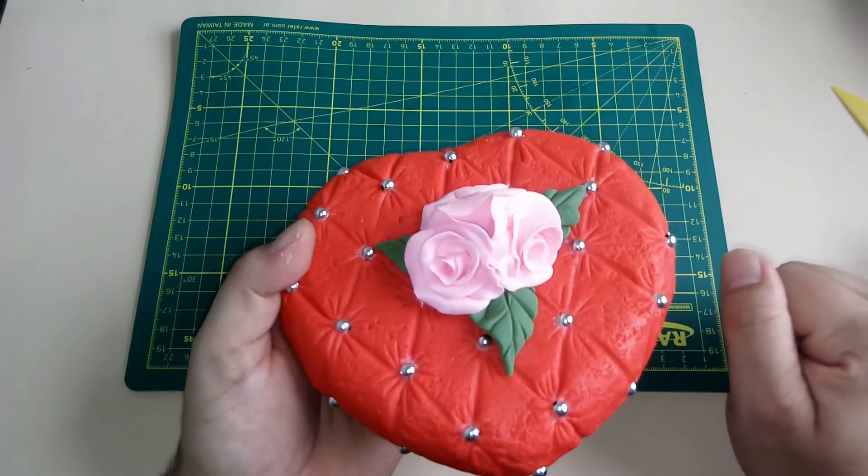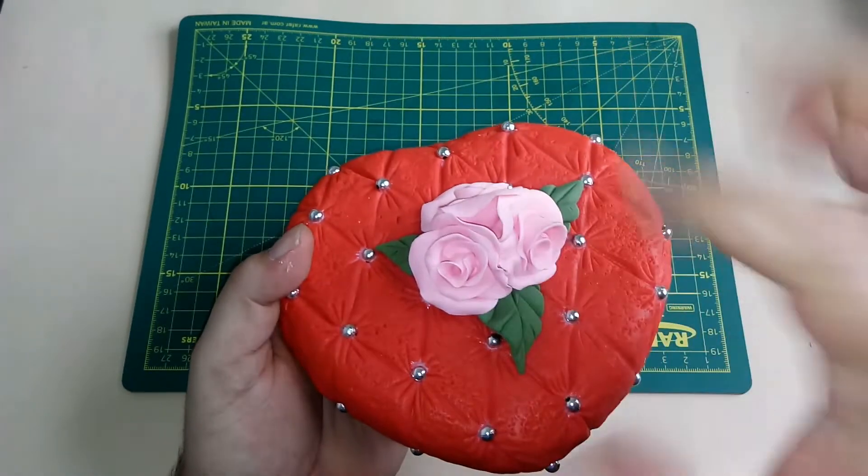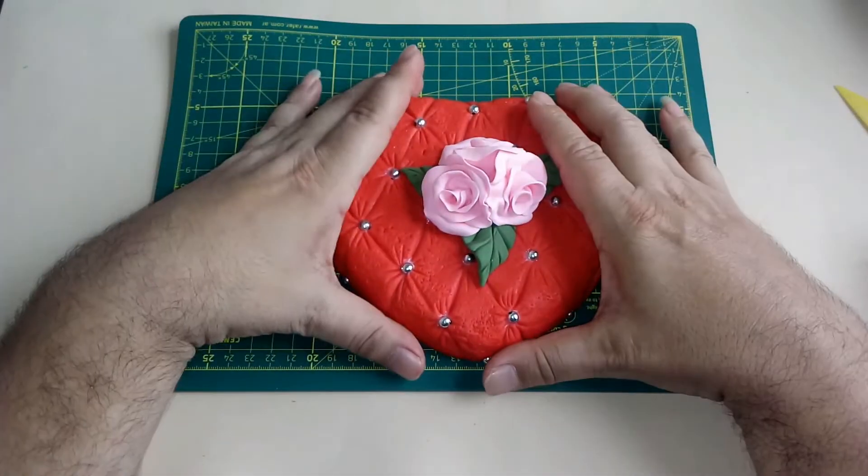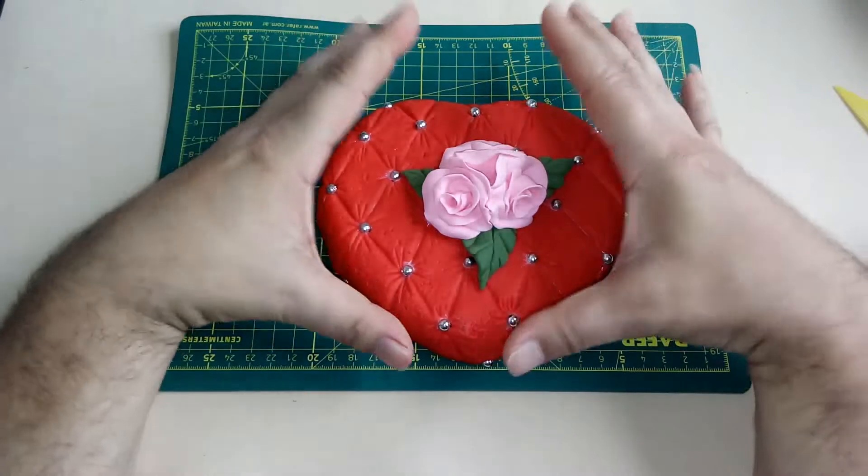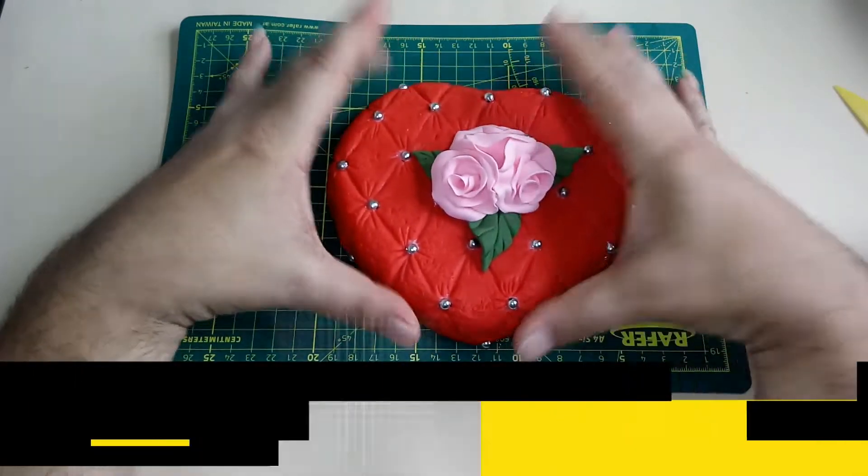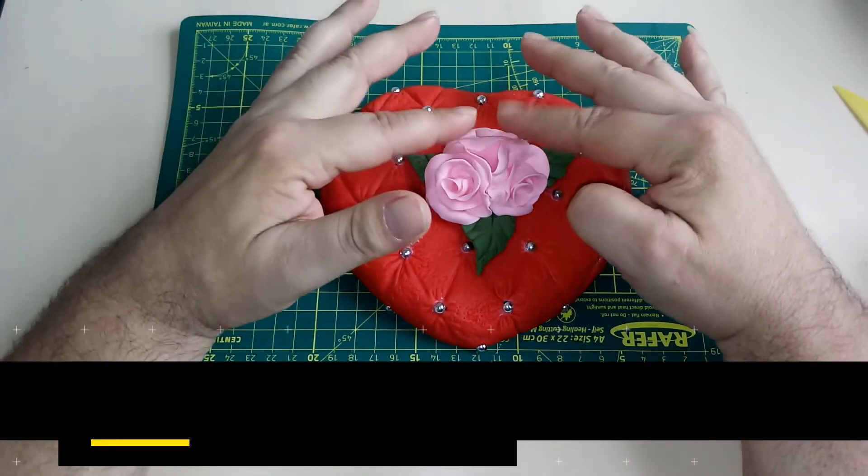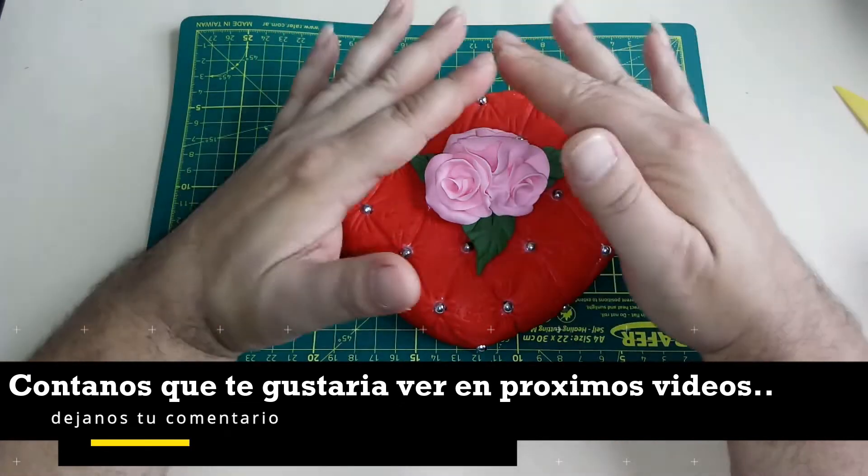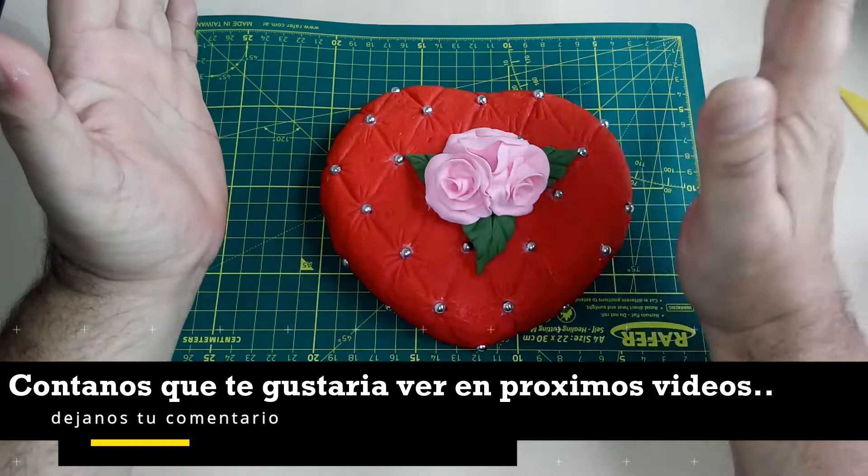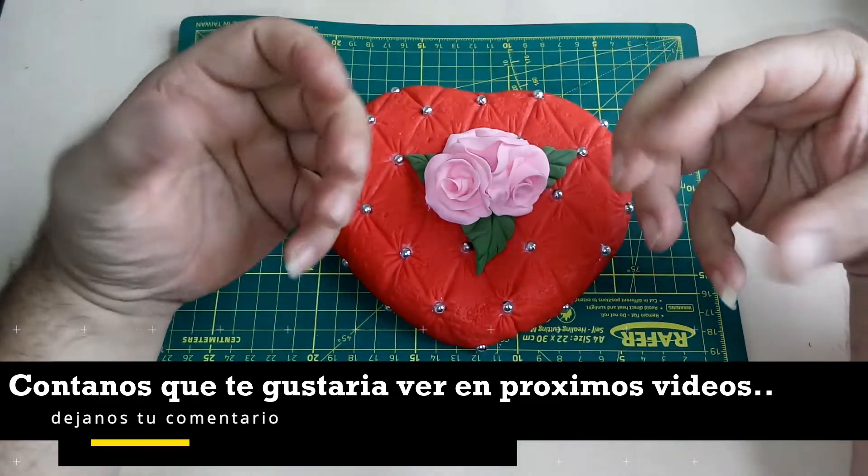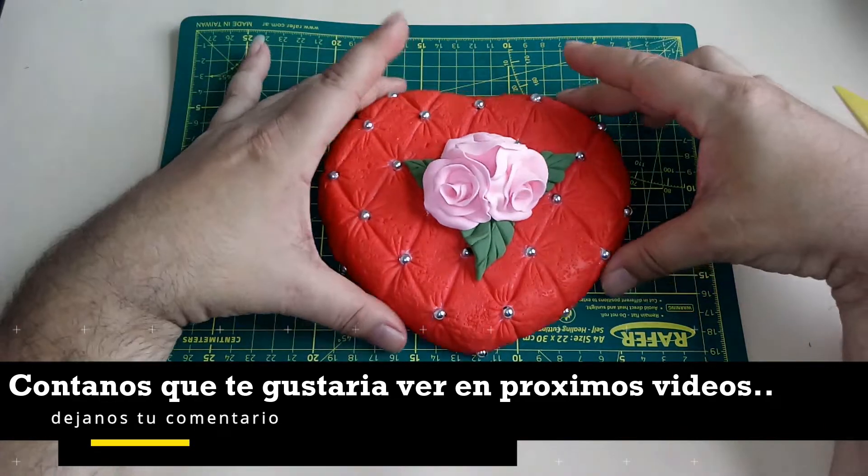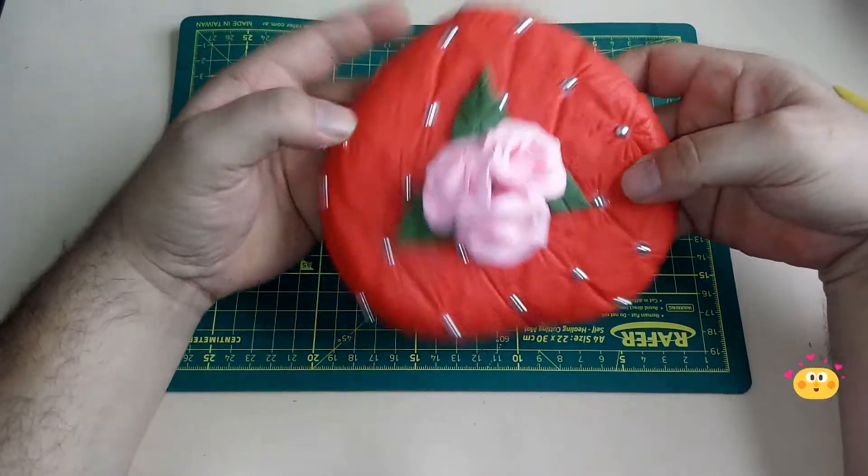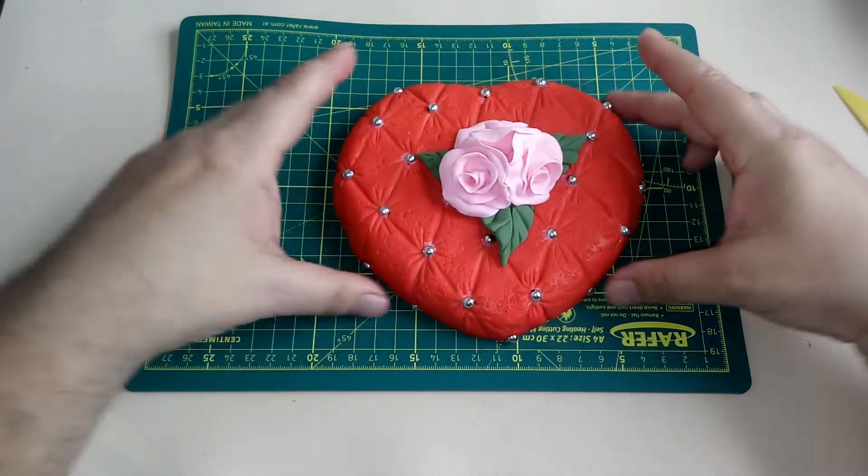Esta masa al secar queda muy flexible, queda como una goma. Y la tapa es lo que nosotros más vamos a manipular, al abrir y cerrar nuestra caja. Entonces, estas flores prefiero que sean de este material, para que no se lastimen con el toqueteo, con los golpes. Me parece que van a durar mucho más estas flores en este material.